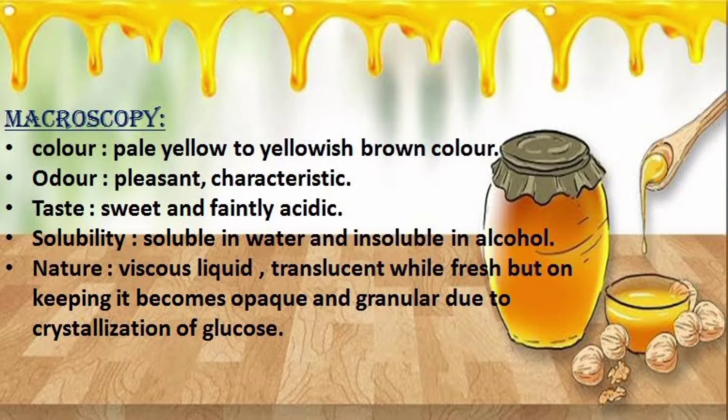Fresh honey is translucent. If you store old honey, it becomes opaque so that you cannot see through from one side to the other. Sometimes it also becomes granular, because glucose particles present in honey get crystallized. So that is the nature of honey.